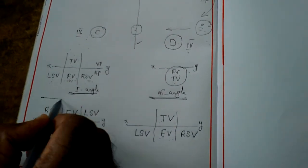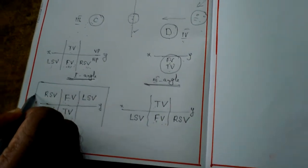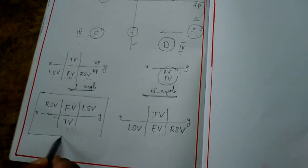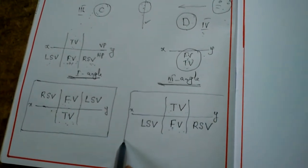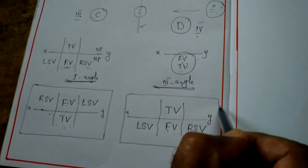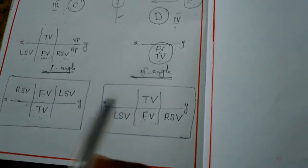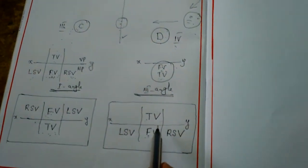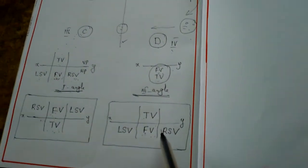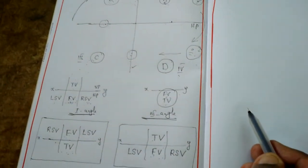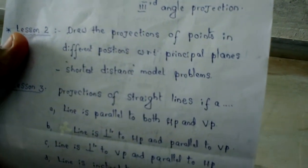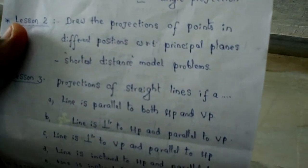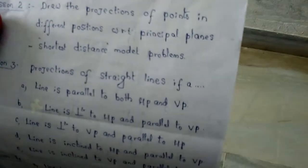These are the basic definitions of first angle and third angle projection methods — very important positions to consider. In the next class, lesson number two, we want to draw the positions of points in different positions with respect to principal planes, and also discuss the shortest distance. So here by summarizing lesson one, we want to differentiate between first angle and third angle projection methods.